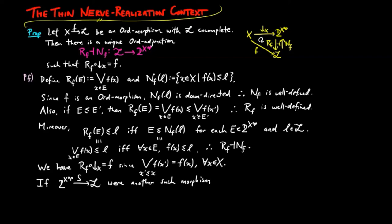then since the lower segment on x assignment is join dense in the down-directed sets on x as we proved in the previous video, we have S composed with lower segment is equal to f which is also equal to Rf composed with the lower segment and so this implies S is equal to Rf which completes the proof.